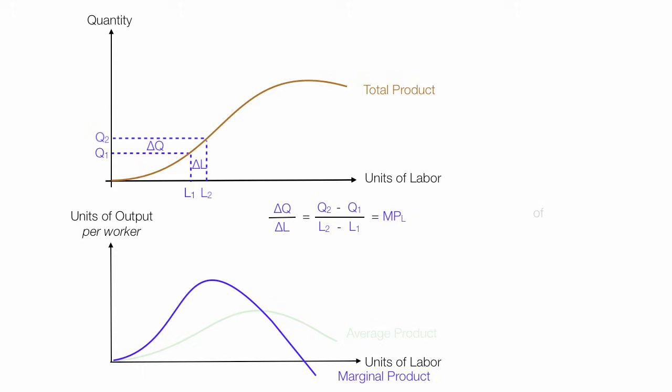So in essence what we want to know is, if labor goes up one unit, how much does quantity produced change? It's the slope of the total product curve. Marginal product of labor is the slope of the total product curve. A tangent line at any point on that total product curve is the slope or the rate of change. And that's also marginal productivity of labor at every point.